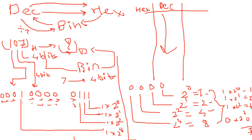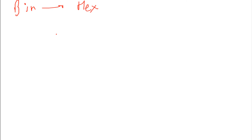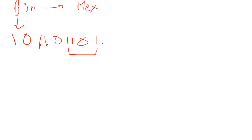Dividing by 2 is much easier than dividing by 16. Then convert that binary number to hexadecimal. To convert binary to hex, make groups of 4 bits from right to left. For example, 101101101 grouped becomes: 0001 | 0110 | 1101.